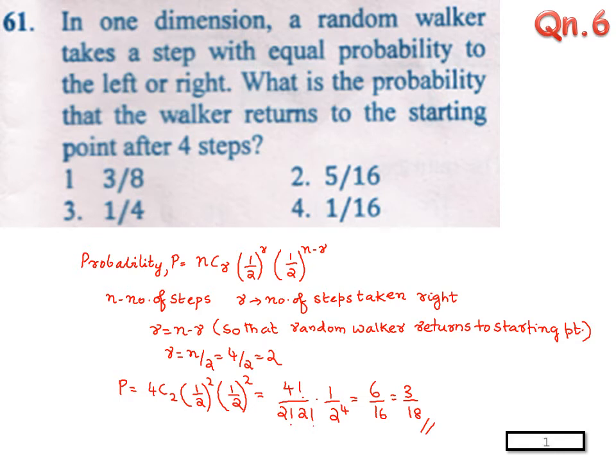Q6. In one dimension, a random walker takes a step with equal probability to left or right. What is the probability that the walker returns to the starting point after 4 steps? So there is a direct formula for finding the answer, but I would rather like to explain this problem using the following diagram.